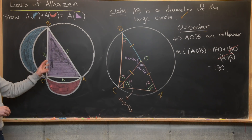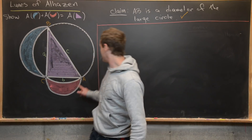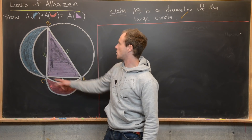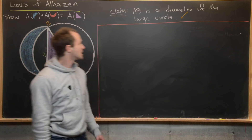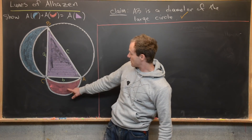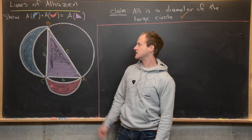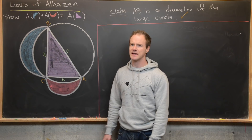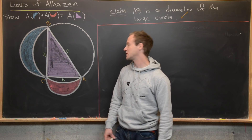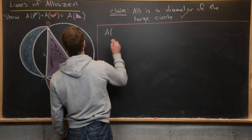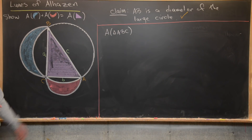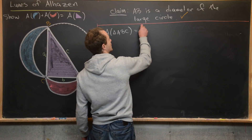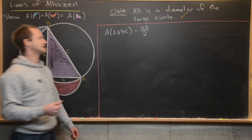We just proved that AB is a diameter of the circumcircle of triangle ABC. Now we're ready to prove that the area of the red lune plus the area of the blue lune equals the area of the triangle. Let's first calculate the area of triangle ABC. Since it's a right triangle, the area is simply one-half base times height, which gives us ab/2.